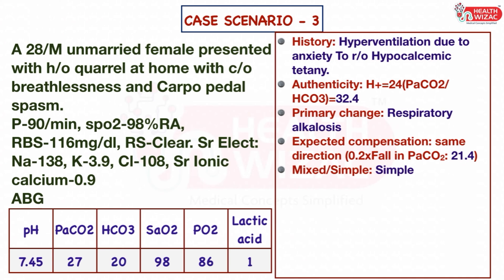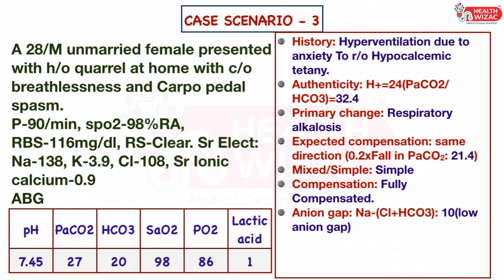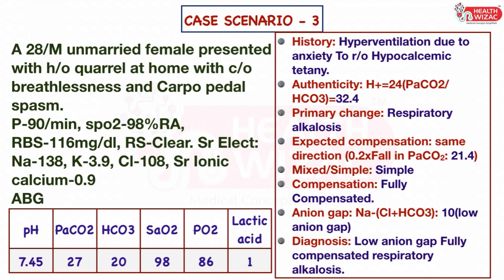Step 5 — the disorder is simple as the same direction rule is followed. Type of compensation is fully compensated as the pH is in the normal range. Step 6 — calculated anion gap is 10, which is low. Final diagnosis: low anion gap, fully compensated respiratory alkalosis.